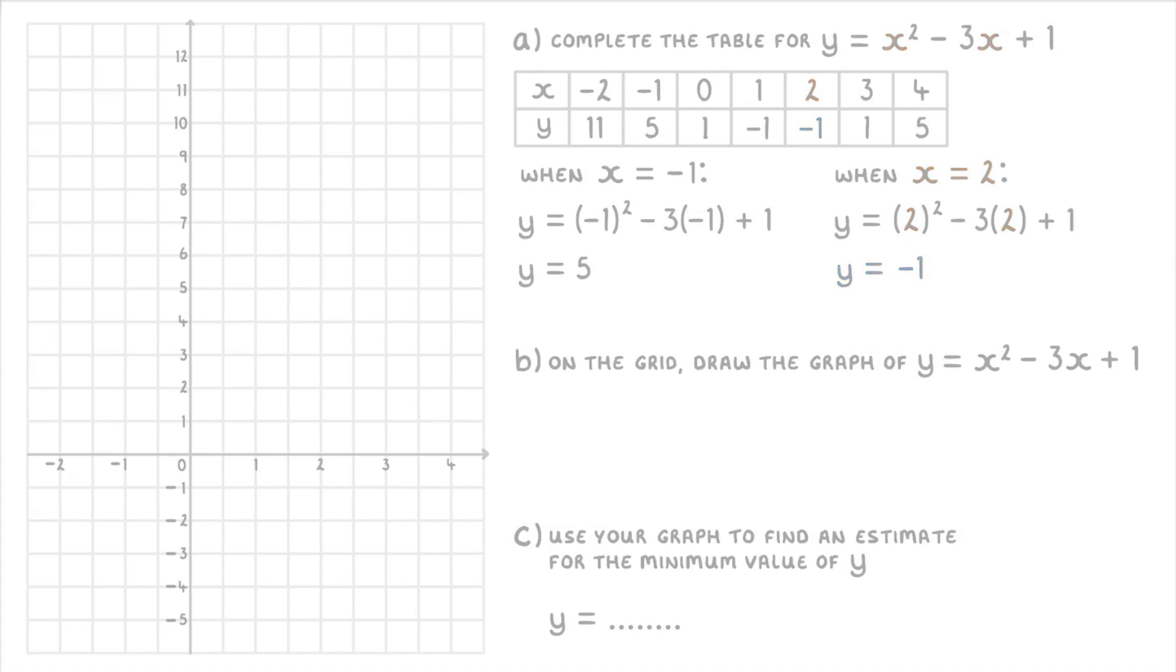Now that we've completed the table we can move on to part b. Before we can actually draw our graph though, we need to plot all of our points: (-2, 11), (-1, 5), (0, 1), (1, -1), (2, -1), (3, 1), and (4, 5). Then we can join them all up with a nice smooth curve.